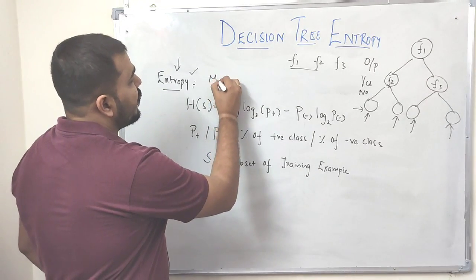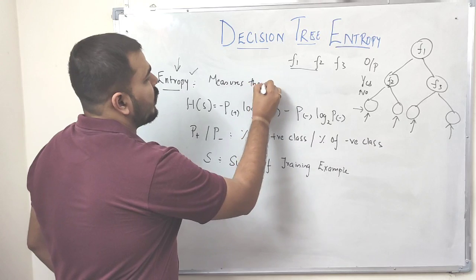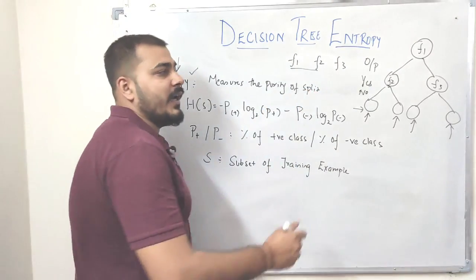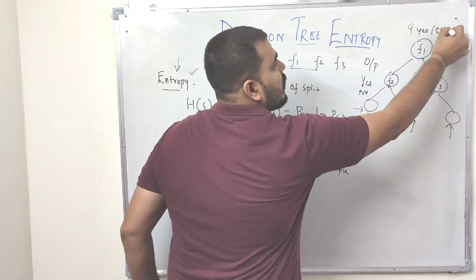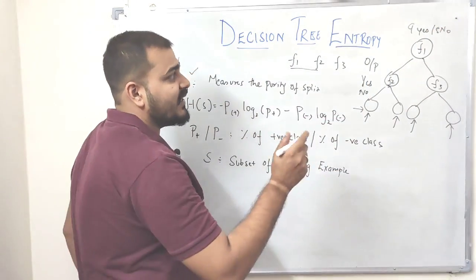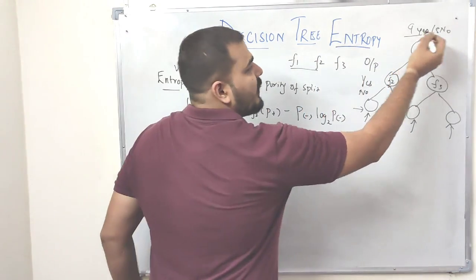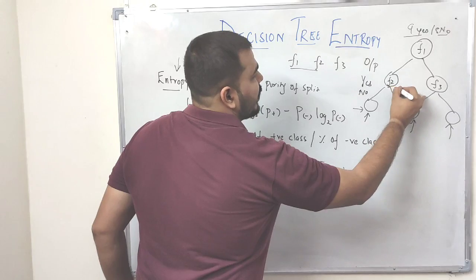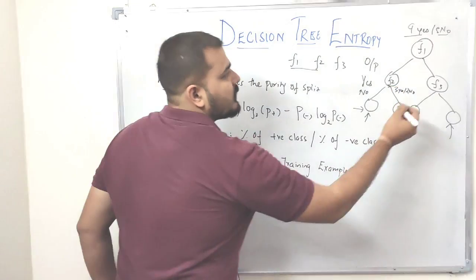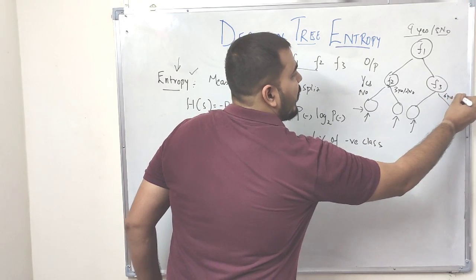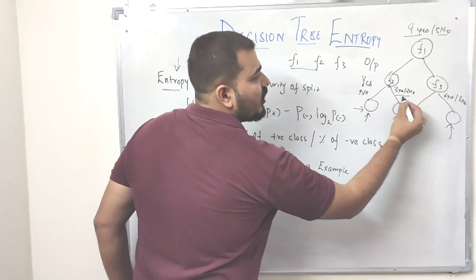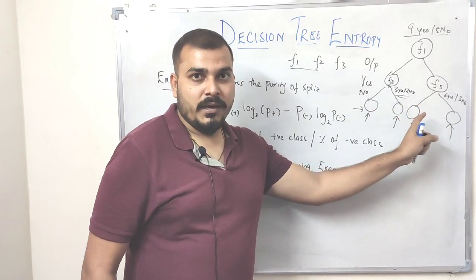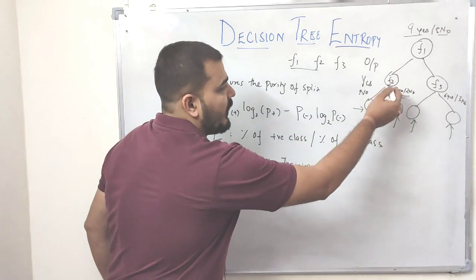Entropy helps us measure the purity of the split. Suppose I selected F1 initially — I had 9 yes and 5 no's as my output class labels. But after I selected F2, I got somewhere around 3 yes and 2 no's in one branch, and 6 yes and 3 no's in another. You can see this is not a pure split, because a pure split basically means you should be getting either all yes or all no. So based on F2, I started splitting more.